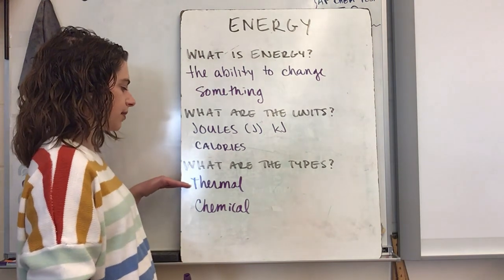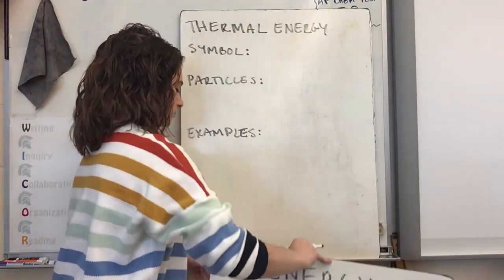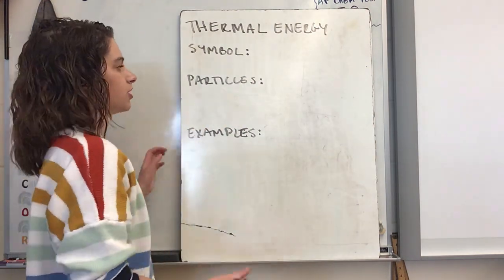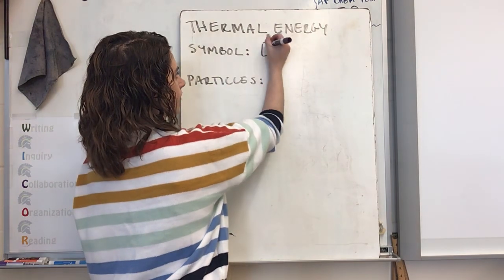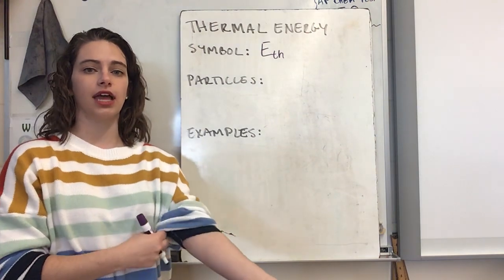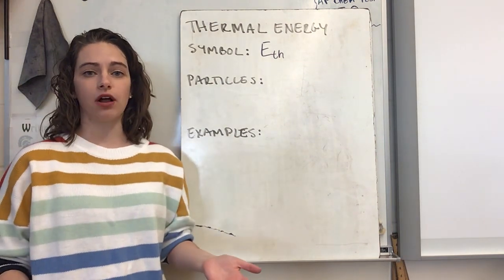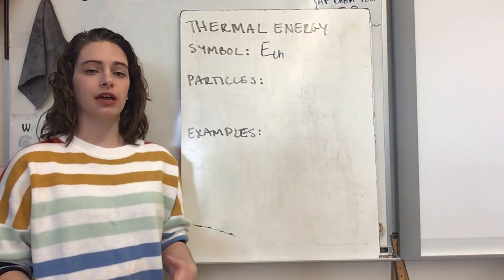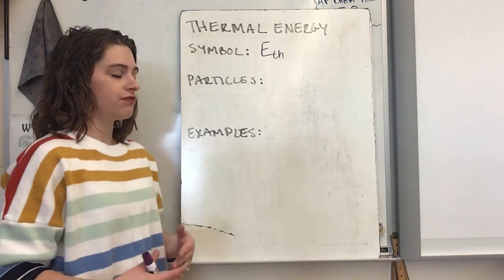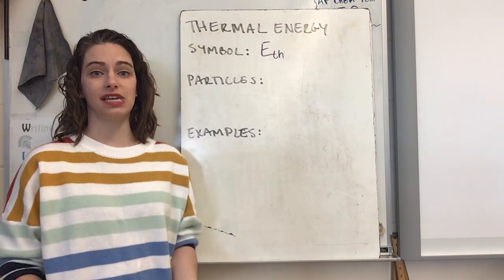Now we're going to split apart and talk about our two different types — thermal and then chemical. Thermal energy we're going to abbreviate with a capital E for energy and then a subscript TH to represent thermal. Thermal energy you might also be more familiar with as the word heat. When we think about things getting hotter or colder, we're looking at changes in the amounts of thermal energy for that substance. Thermal energy affects the speed of the particles.